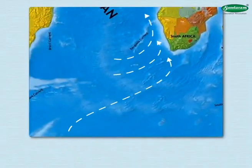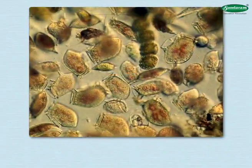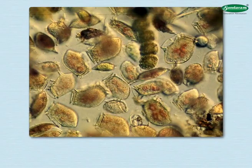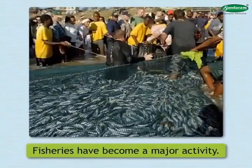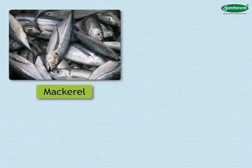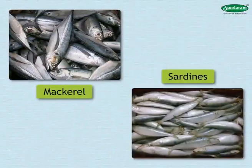Fisheries: An extensive coast, the Benguela cold current along the west coast, and the plankton — the choice feed for fish available on the continental shelves — are responsible for the large fish population in this area. Hence, fisheries have become a major activity in South Africa. Mackerel, sardines, etc. are the fish found here.